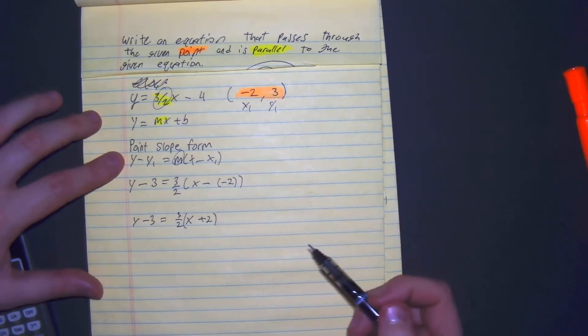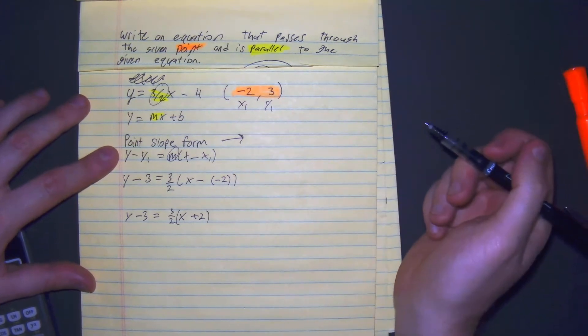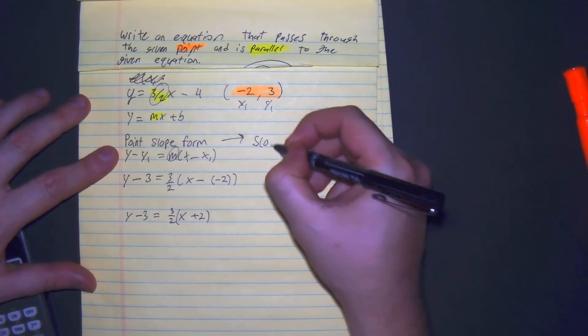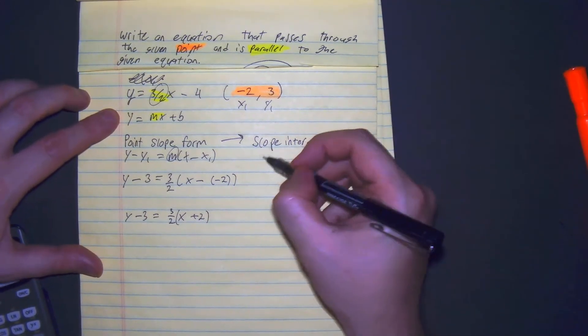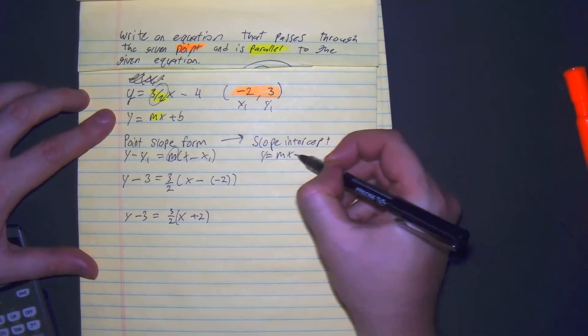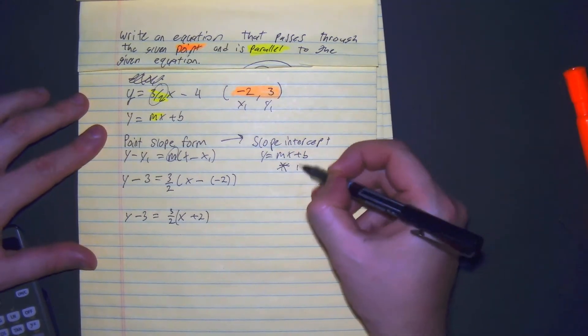Now that we have it officially in point-slope form, I want to finish this problem by putting it into slope-intercept form, which is y equals mx plus b. The key to this is we isolate y.